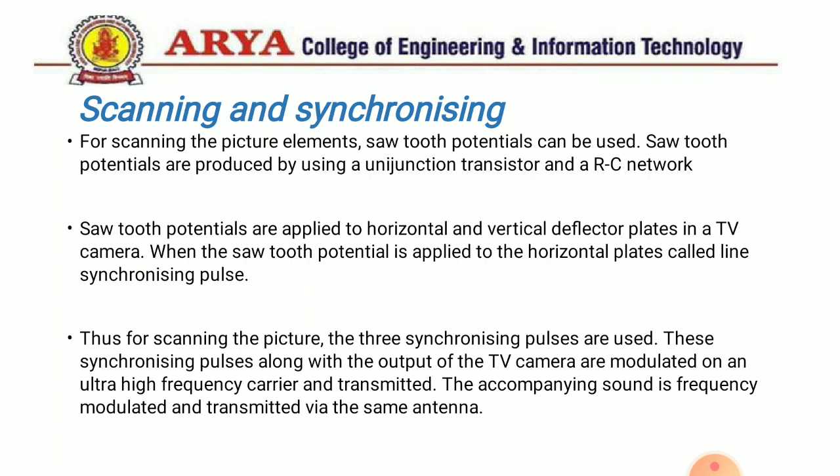For scanning the picture elements, sawtooth potentials are used. Sawtooth potentials are produced by using a unijunction transistor and an RC network. These sawtooth potentials are applied to the horizontal and vertical deflection plates in a TV camera. When the sawtooth potential is applied to the horizontal plates, line synchronizing pulses are generated. For scanning the picture, three synchronizing pulses are used, which along with the output of the TV camera are modulated on an ultra high frequency carrier and transmitted.